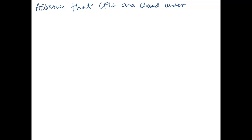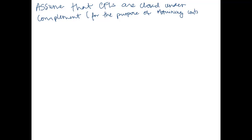You might think: union, intersection, complement — that reminds you of De Morgan's laws. We're going to use the fact that context-free languages are closed under union but not intersection to show they are not closed under complement. We'll do a proof by contradiction. So let's suppose that context-free languages are closed under complement, for the purpose of obtaining a contradiction.